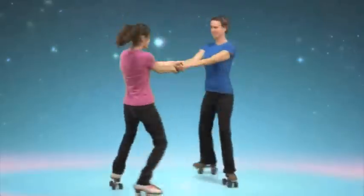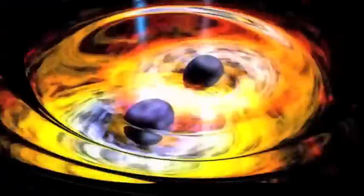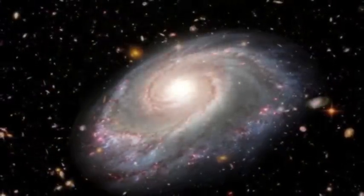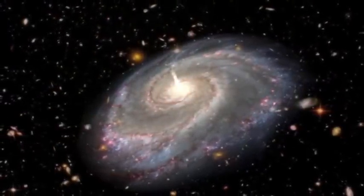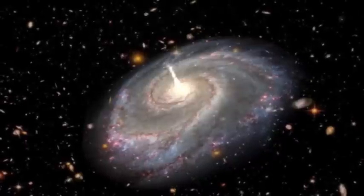When two black holes merge, all of that rotation will end up in a single object, making it spin very fast. NuSTAR is going to measure how fast black holes are spinning, which gives us information about how the black holes form and what role they play in the formation of galaxies.